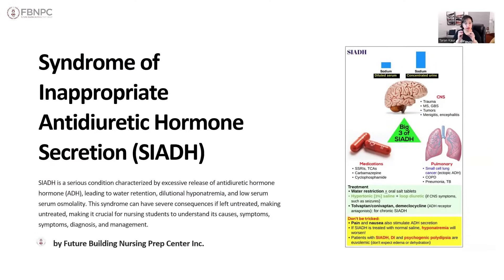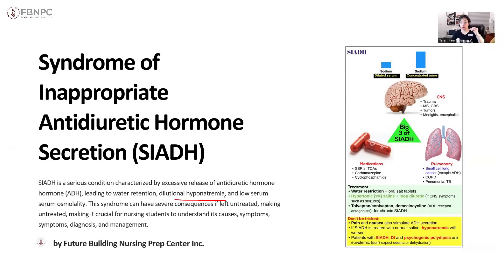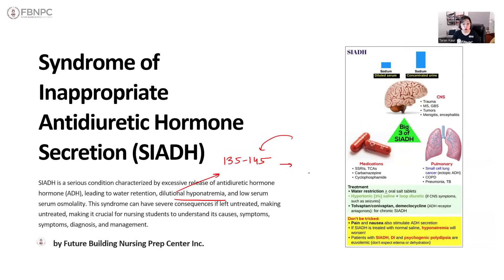In SIADH, there is an excessive production of antidiuretic hormone. Since this is a water-holding hormone, your patient will exhibit water retention and will have dilutional hyponatremia. If you add more water into the blood, it causes dilution, and as a result all the electrolytes — including sodium — will start dipping down. The normal sodium level is 135 to 145, but if we add more water, the sodium level will start going down.